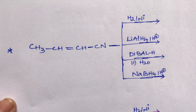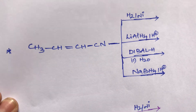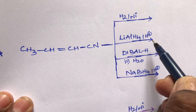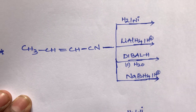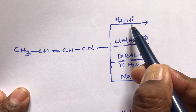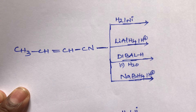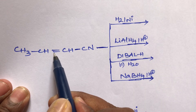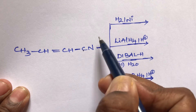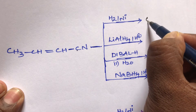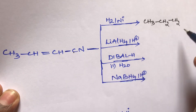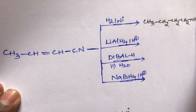Next example: the compound CH3-CH=CH-Cl — reduction with (a) hydrogen in the presence of nickel, (b) lithium aluminum hydride, (c) DIBAL, and (d) sodium borohydride — do they give the same or different products? H2 with nickel is catalytic hydrogenation; nickel acts as a catalyst and can reduce everything: double bonds, triple bonds, cyanogroups, and isocyanogroups. So here H2/Ni converts the double bond to a single bond and the cyanogroup: carbon becomes CH2, N becomes NH2 — final product CH3-CH2-CH2-CH2-NH2.